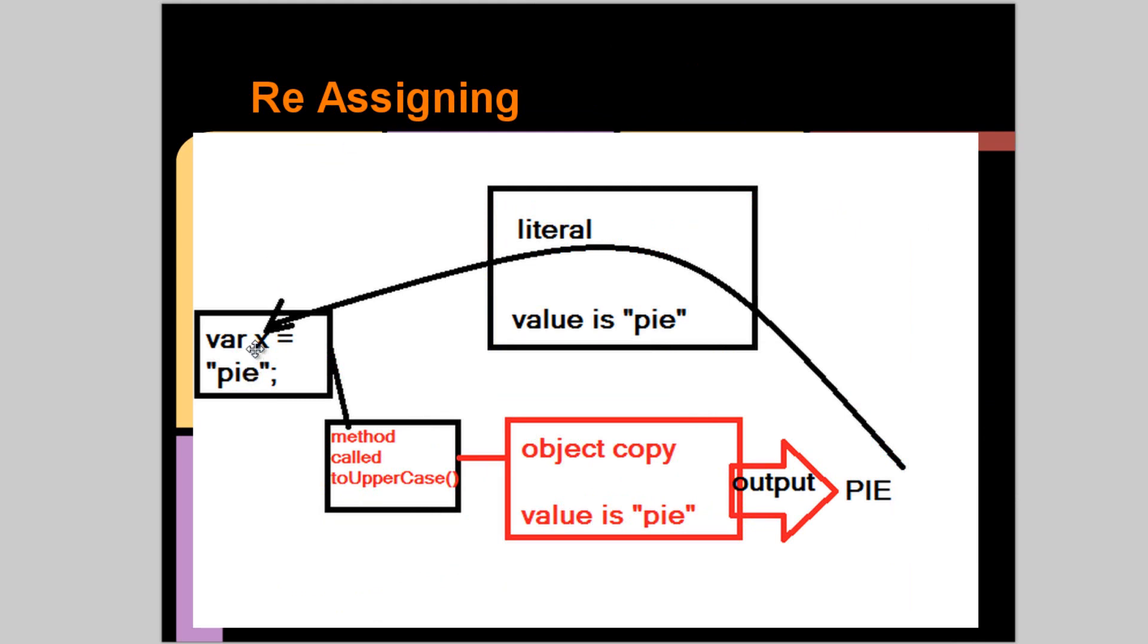Now we reassign it. So we have variable x is equal to the string "hi". It's a method, so we call it to uppercase. It goes to the object copy, which is "hi" lowercase, and it outputs "HI" in all capital letters. We then take this value, reassign it to the original value. So whenever we use the variable in the next coding sequence, variable x is now going to have the value "HI" in all capital letters. And as you can see the literal over here, nothing is done with it. It's still the value "hi", unless we change what variable x is equal to value-wise.